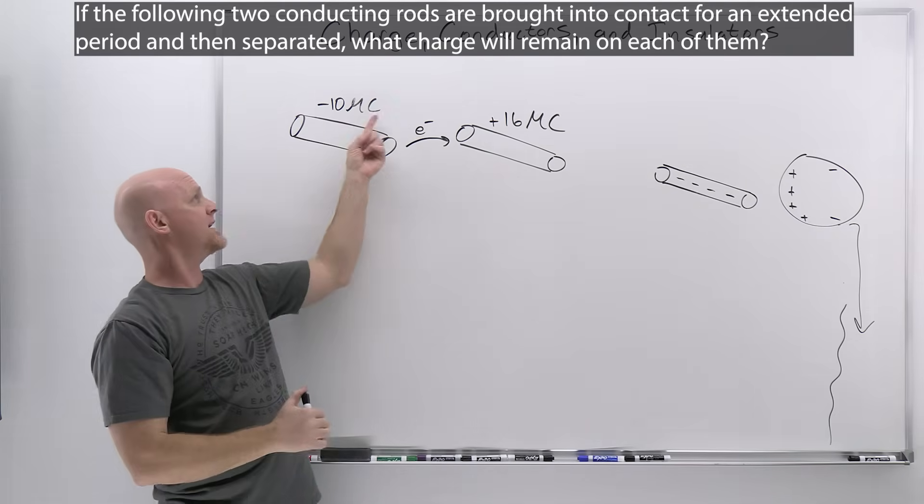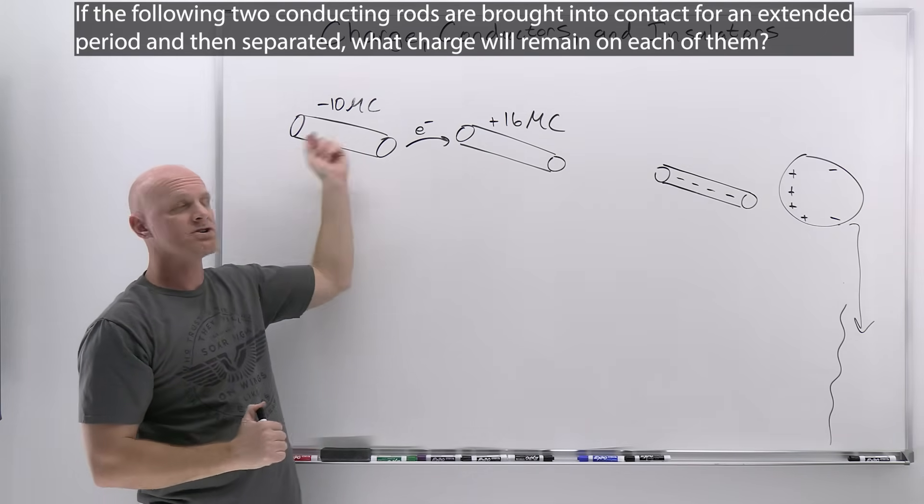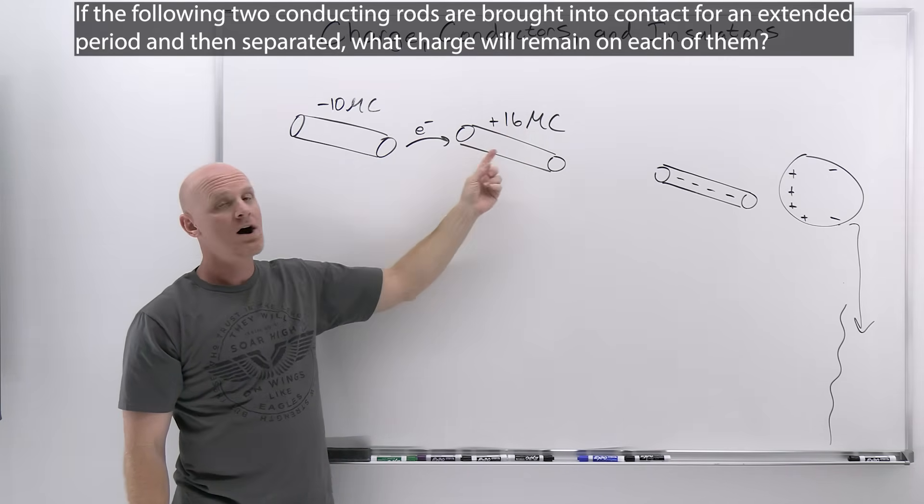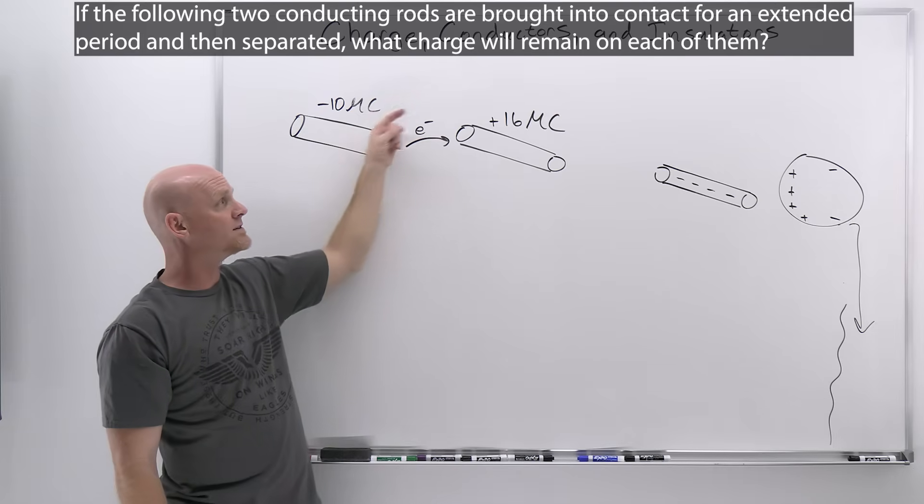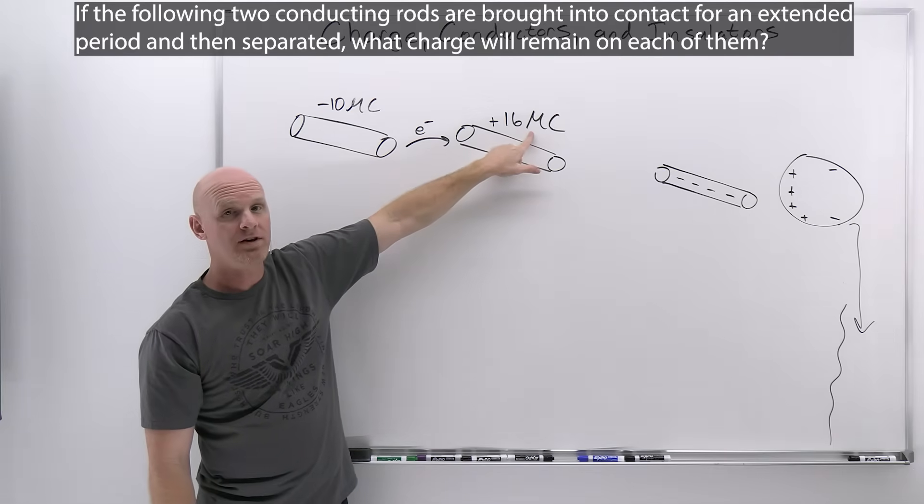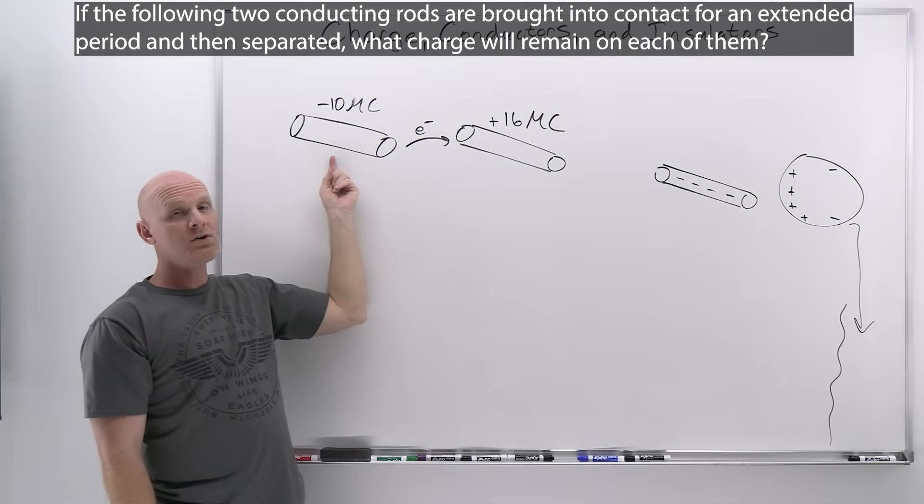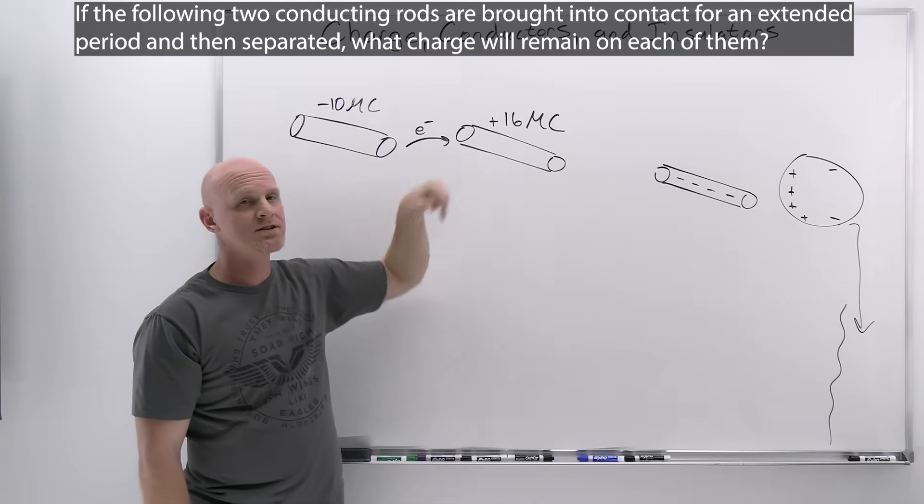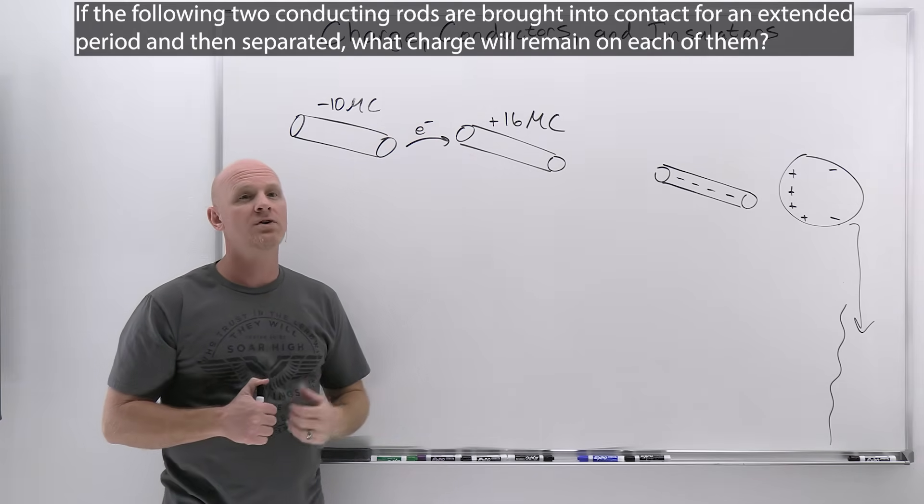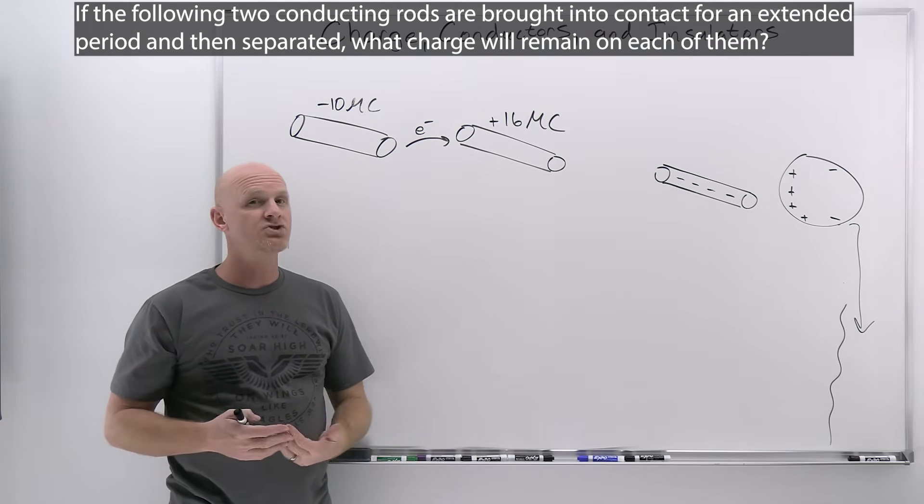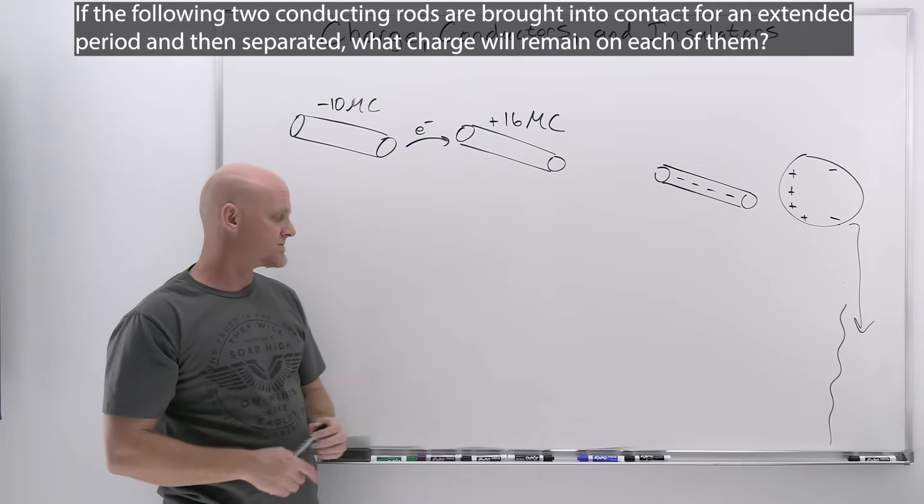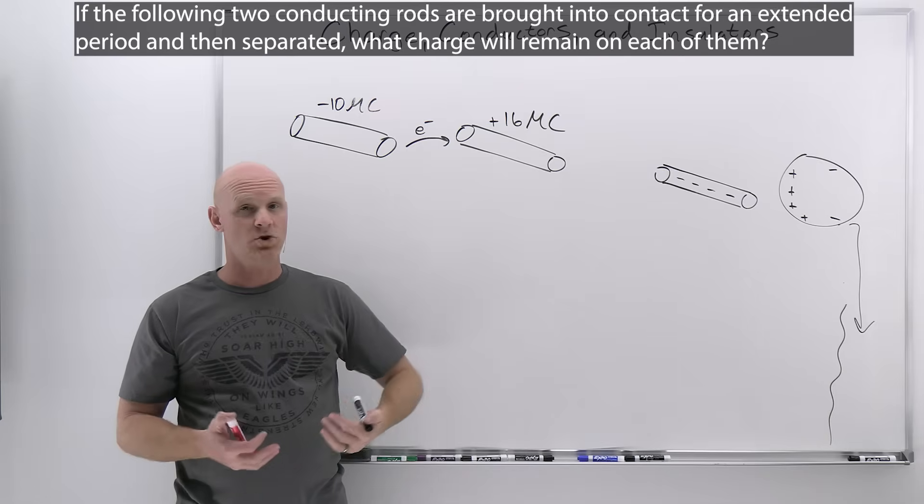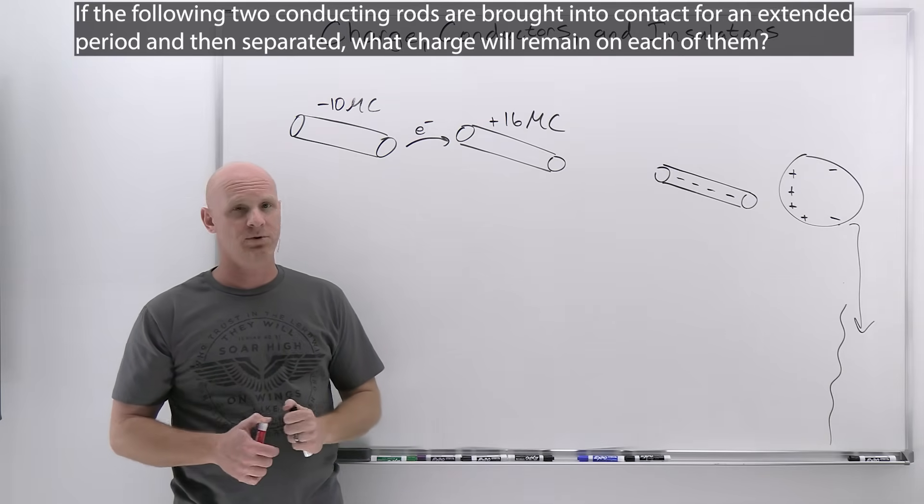Electrons here, there's excess electrons that are repelling each other, and there's excess protons on this side, a lack of electrons. The electrons are attracted towards the positive 16 microcoulombs, the excess of protons, and repelled away from the excess of electrons. This impetus for the electrons to transfer, provided they're in contact long enough, will continue until there's no more impetus for them to transfer. That's going to ultimately be when they have the same charge.